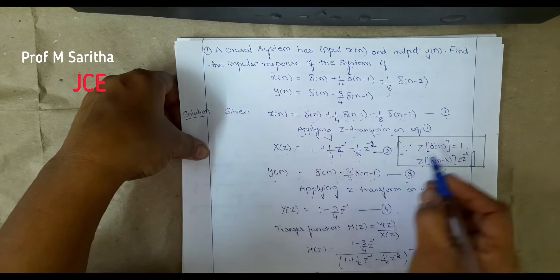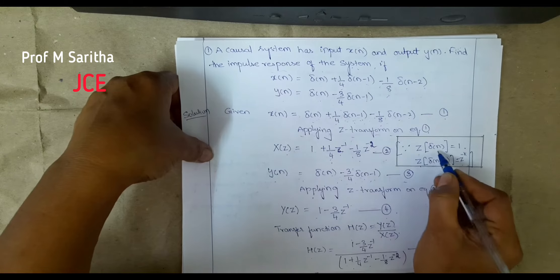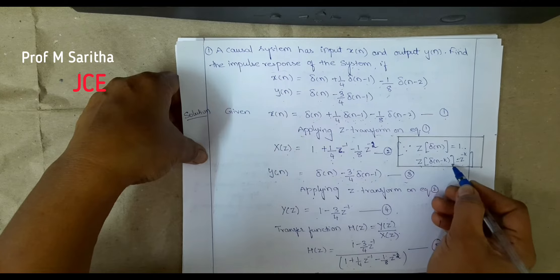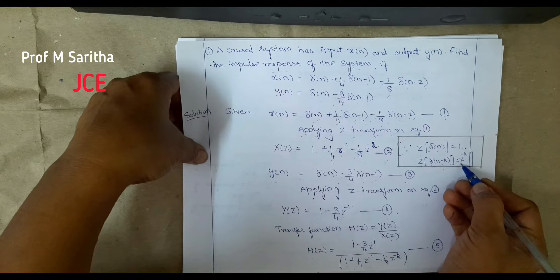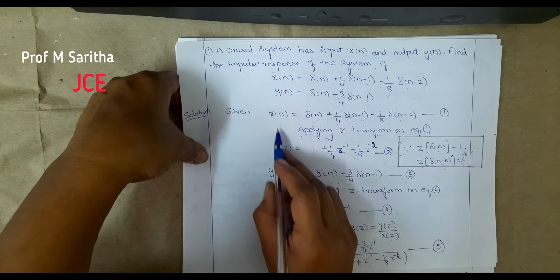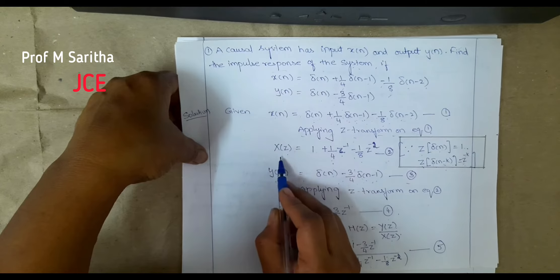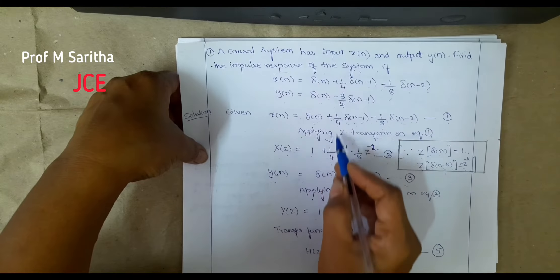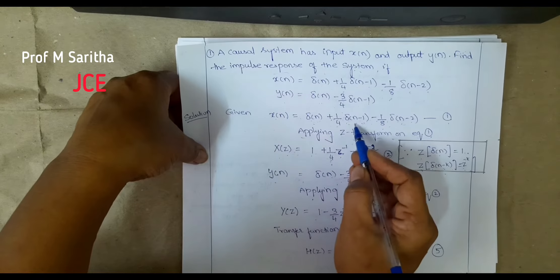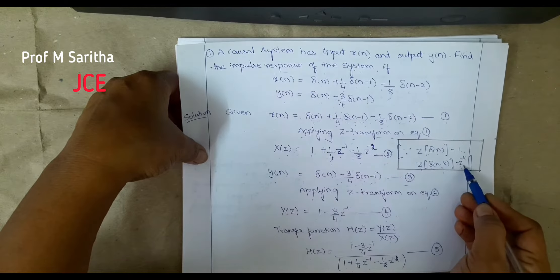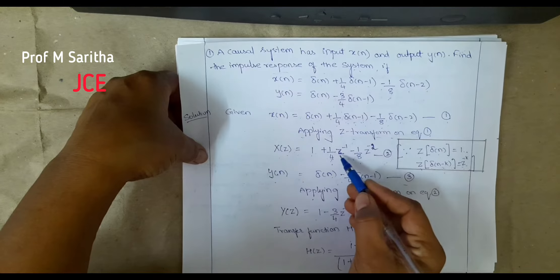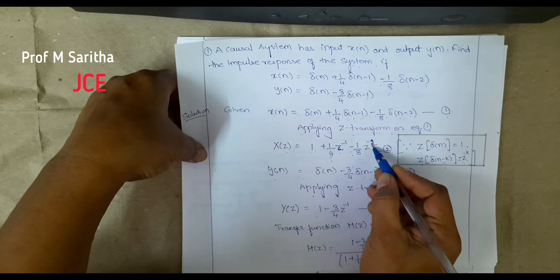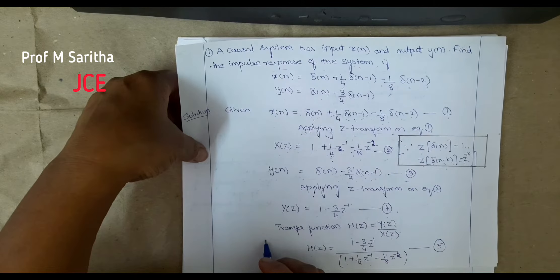Before applying the Z-transform, recall that the Z-transform of the impulse response δ(n) is 1, and the Z-transform of the shifted impulse δ(n−k) is z^(−k). Therefore, X(z) = 1 + (1/4)z^(−1) − (1/8)z^(−2). Let us take this as equation 2.